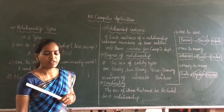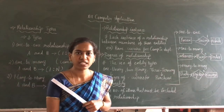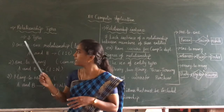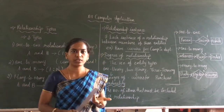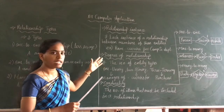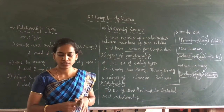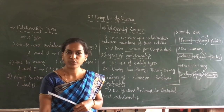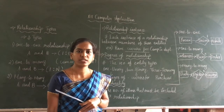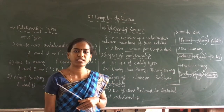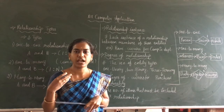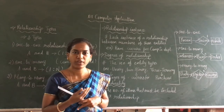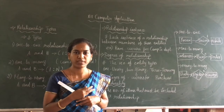We have concluded the third type of ER basic models, which is relationship types. We have seen three types of relationship — one-to-one, one-to-many, and many-to-many — and three subtopics: relationship instance, degree of relationship, and cardinality. This is all theoretical concept and you can easily study and understand it. I hope you all understood. If you have any doubts, please reply or ask. Thank you.